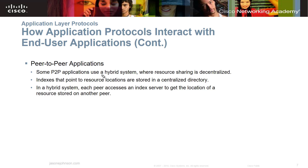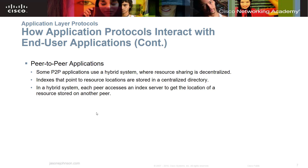Peer-to-peer applications can also use a hybrid system where some resource sharing is decentralized. A server may hold header file information while the actual data is distributed across many clients. Indexes pointing to resource locations are stored in a central directory, keeping overhead low. In the hybrid system, each peer accesses an index server to get the location of all stored information — for example, a file may be spread across 10 different clients, and your computer requests all the pieces, then reassembles them locally.